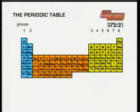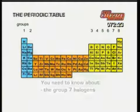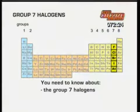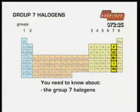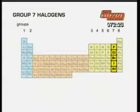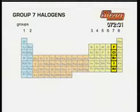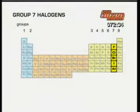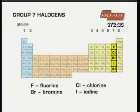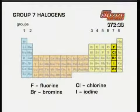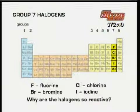The next group you need to know about is group 7, the halogens. The group 7 halogens is another group of highly reactive elements near the other end of the periodic table. The most common ones are fluorine, chlorine, bromine and iodine. Watch the next clip and see if you can work out why these halogens are so reactive.